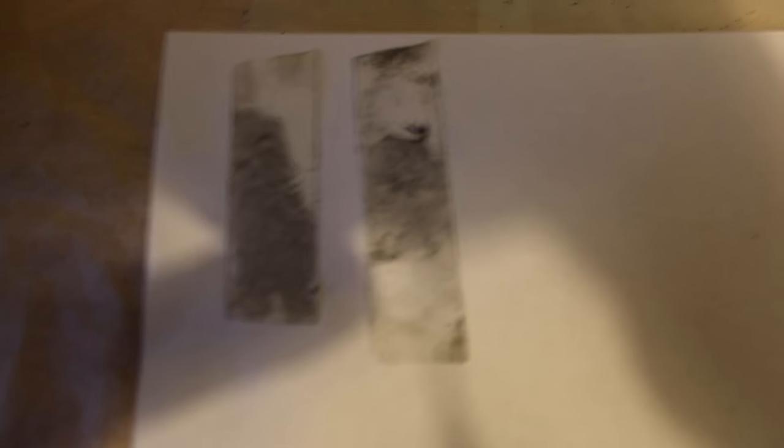Como podéis observar, he hecho dos pruebas. En la primera no se ve absolutamente nada. Pero en la segunda, a ver si enfoco un poco mejor. Bueno, no da la cámara. Ya podemos observar nuestra huella dactilar recién obtenida. Ahora, ¿qué haríamos? Pues cogeríamos este papel y lo meteríamos dentro del escáner. La escanearíamos, la recortaríamos y la mejoraríamos.